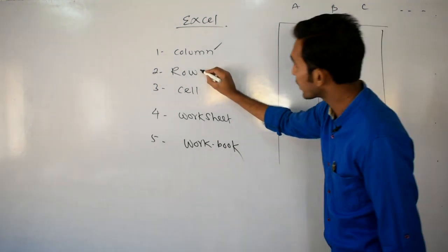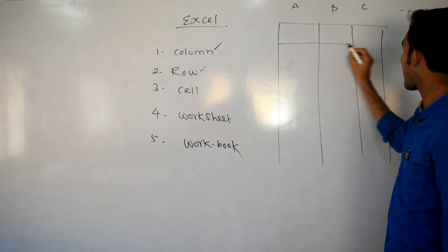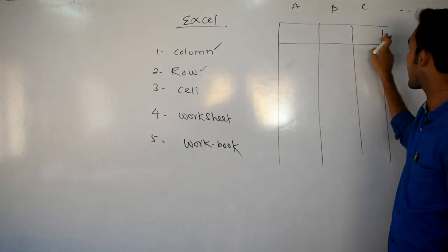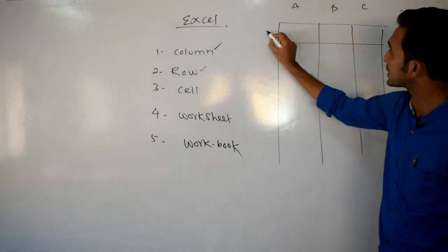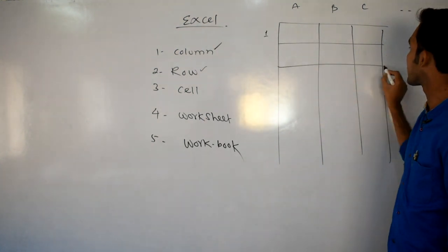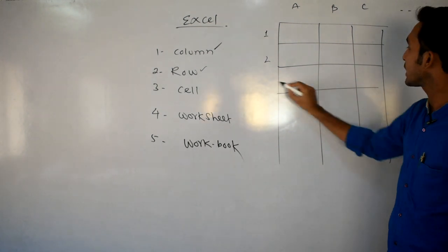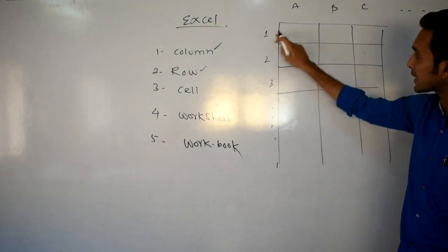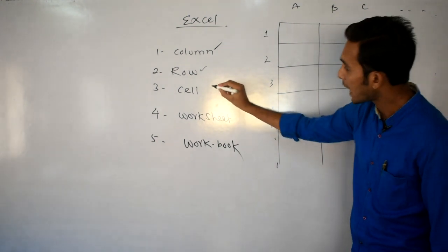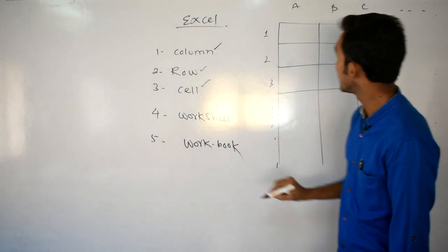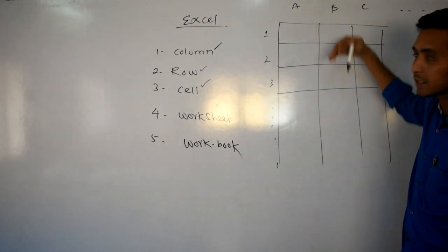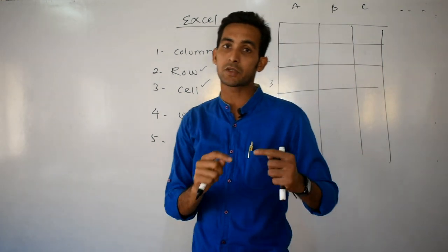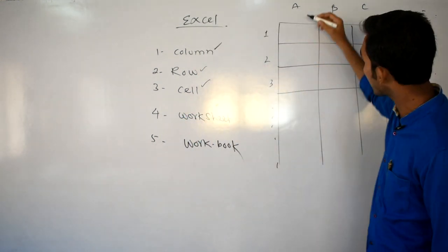Row is a horizontal line from left to right, which is represented by numbers 1, 2, 3 and so on. A cell is where one column and one row intersect with each other — that point is known as a cell.